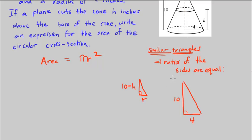So the ratio means, basically, r is this base, r divided by 4 equals this side divided by this side, 10 minus h divided by 10.